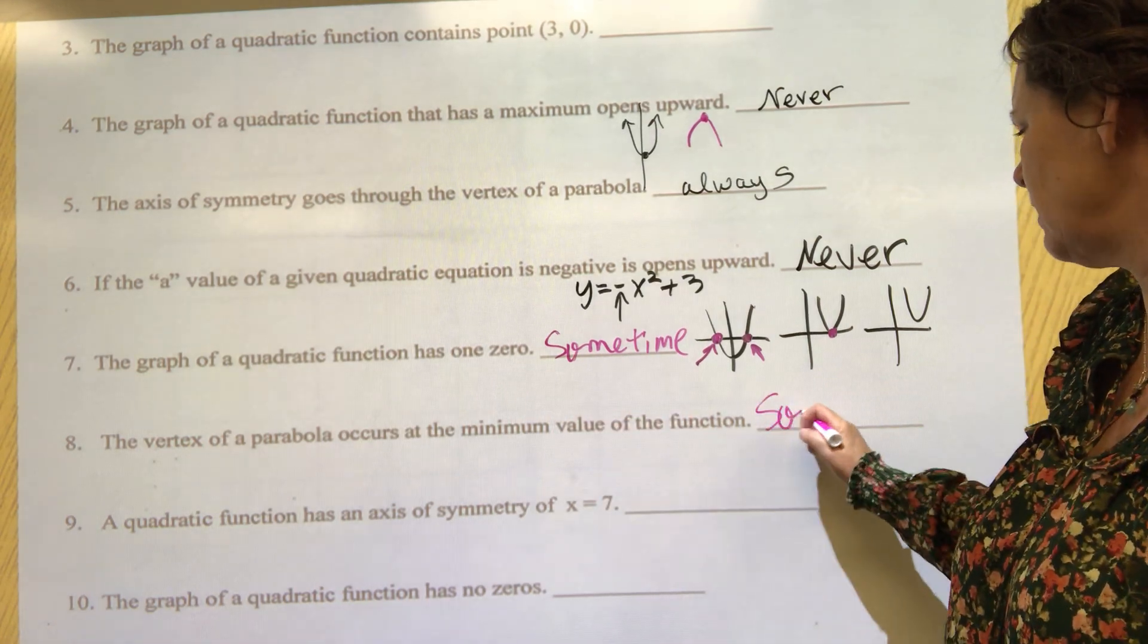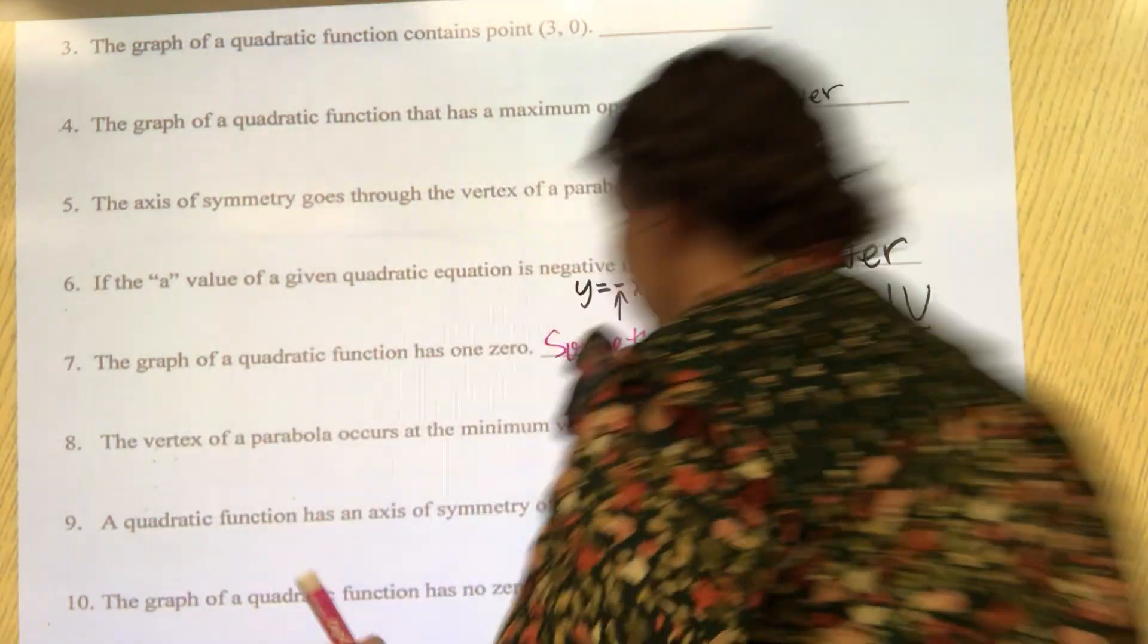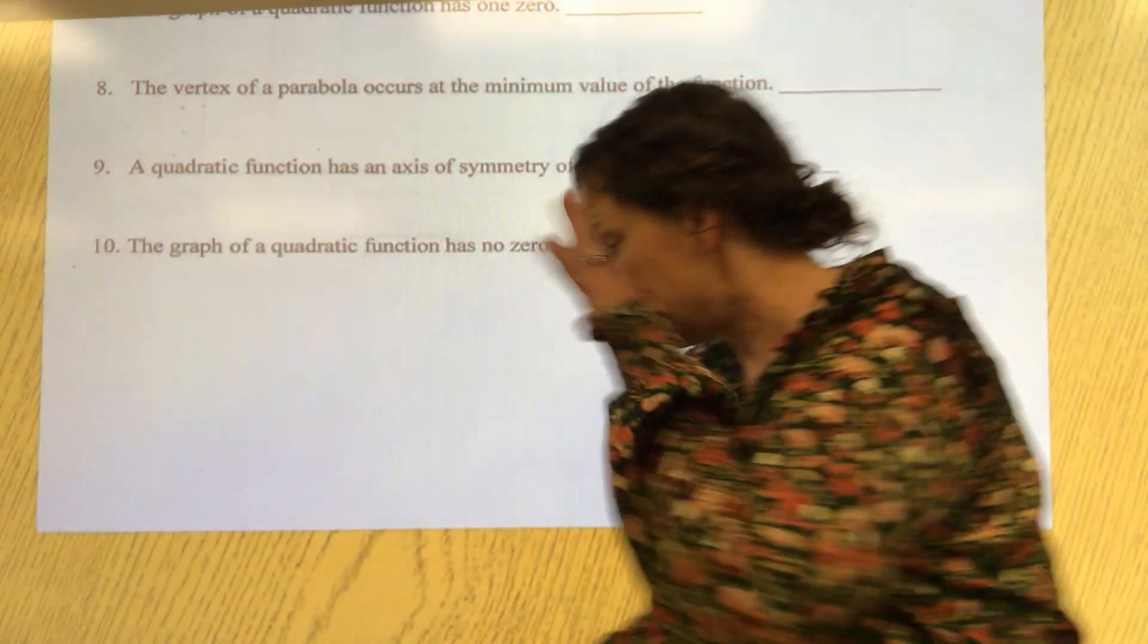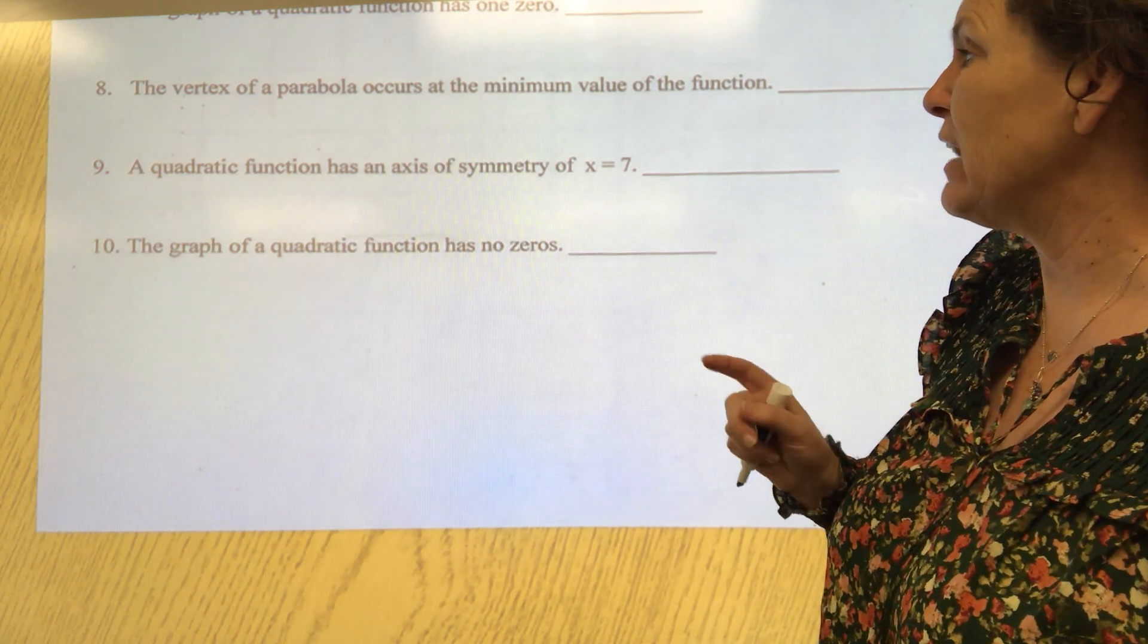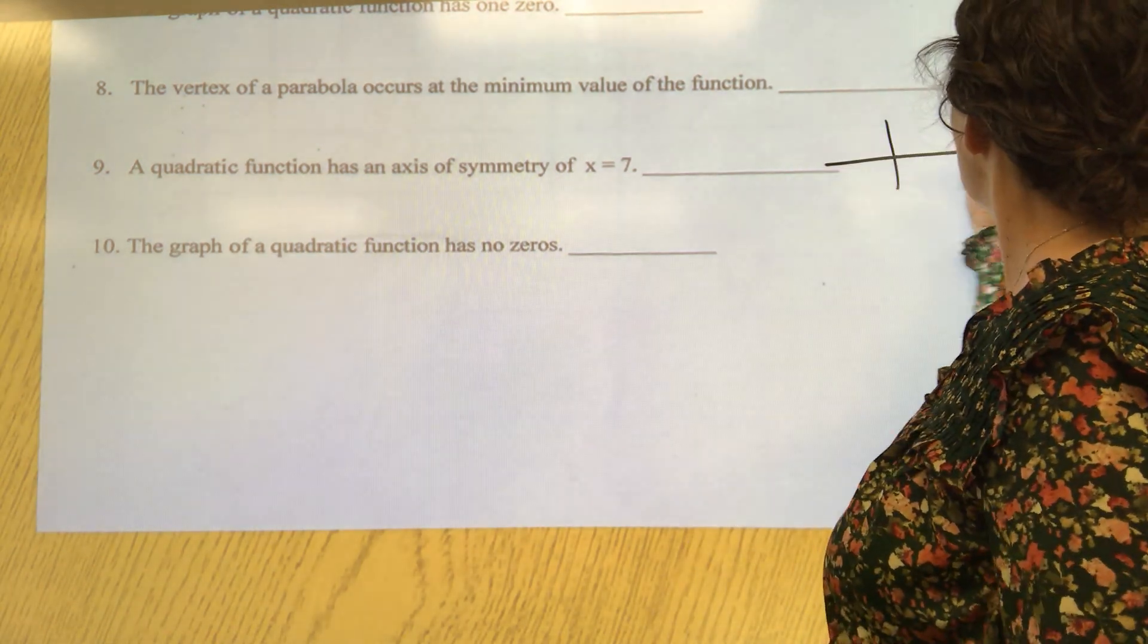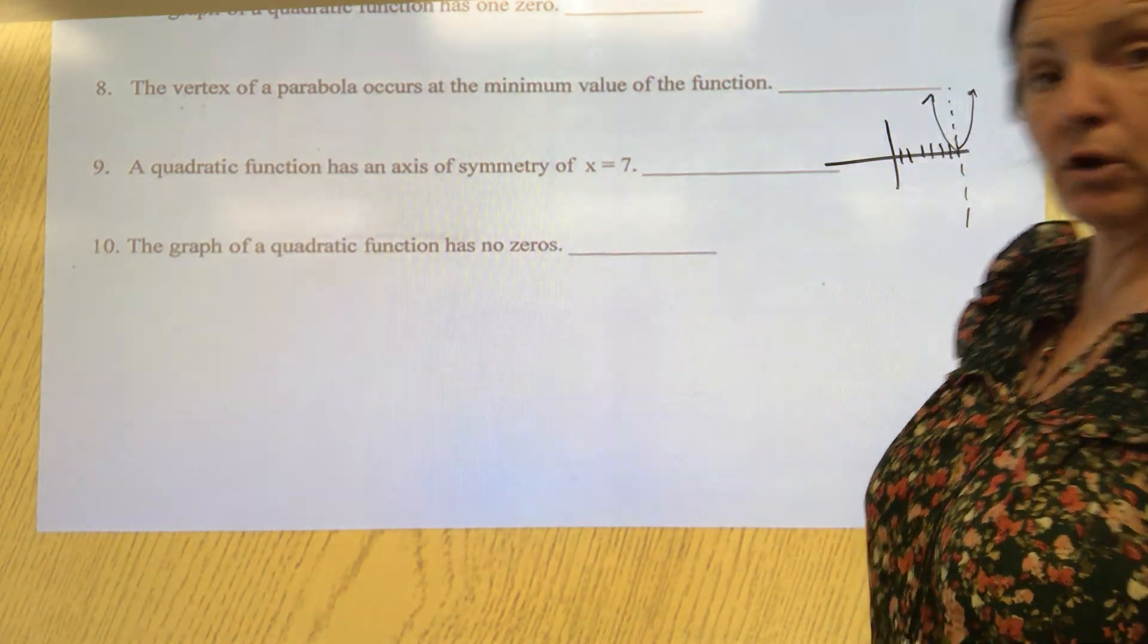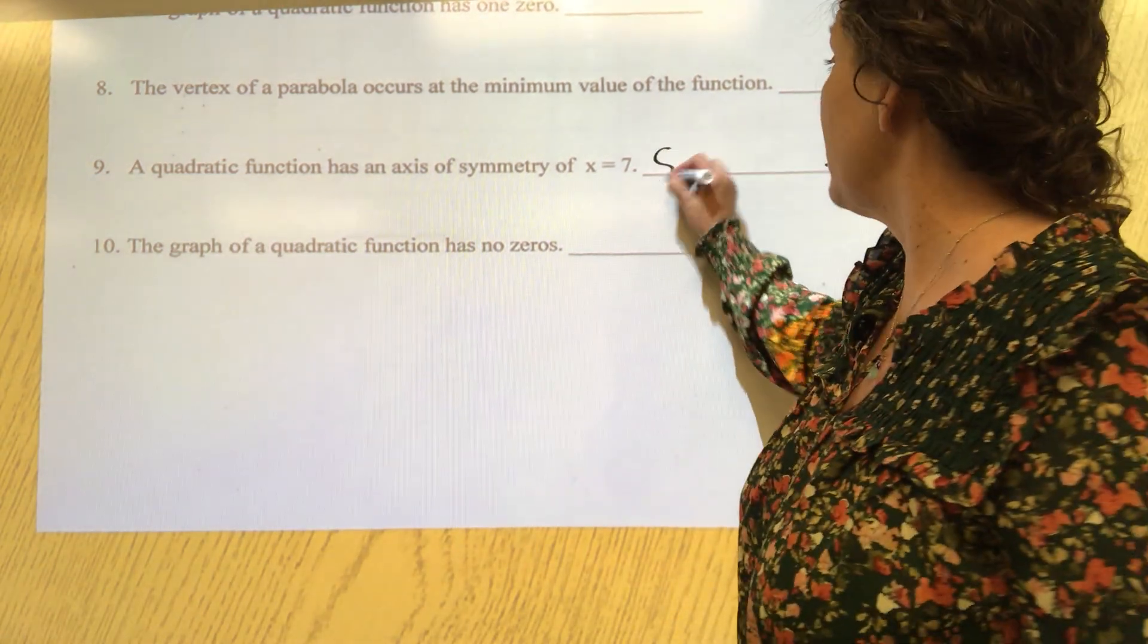Last two - excuse me. The quadratic function has an axis of symmetry at y equals seven. One, two, three, can you see that? Four, five, six, seven - axis of symmetry. Well, I just drew one, but are they all going to have an axis of symmetry at x equals seven? No, but sometimes it could.